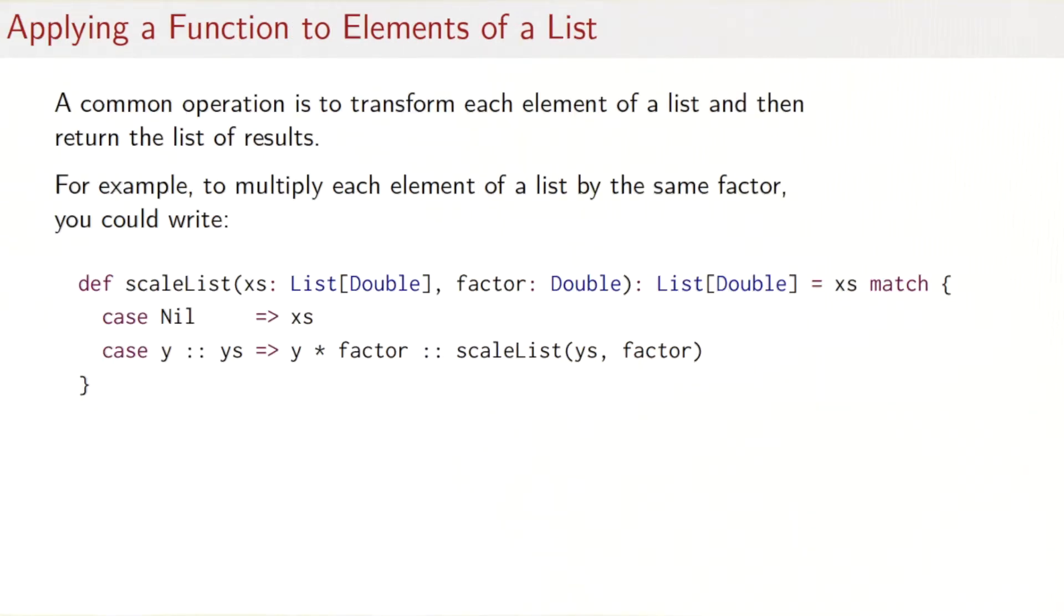A first common operation is to transform each element of a list and then return the list of results. For instance, to multiply each element of a list by the same factor, you could write a function scaleList, which takes a list of doubles as input and a factor and returns a list of double. If the input list is nil, it just returns it unchanged, and otherwise it multiplies the first element of the list by the factor, and it does a recursive call of scaleList with the rest of the list and factor.